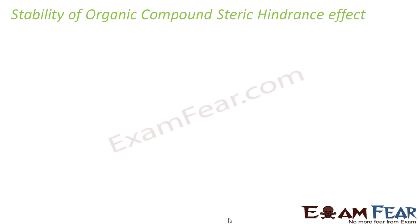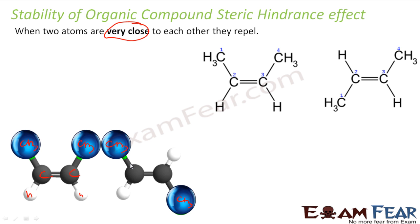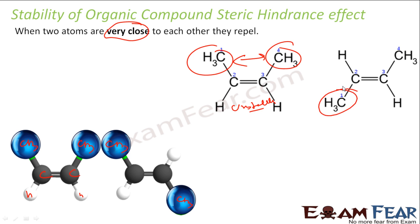Next is steric hindrance. When two atoms are very close to each other, they repel each other. For example, if we have two carbons each bearing a large CH3 group and they are very close together, those CH3 groups will repel each other, making the compound unstable. But if the same compound is arranged so that the methyl groups are on opposite sides, the steric hindrance is less because the distance between them is greater, so this arrangement is stable.